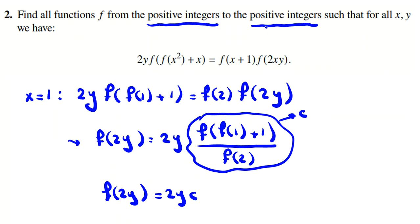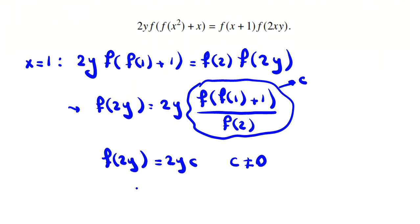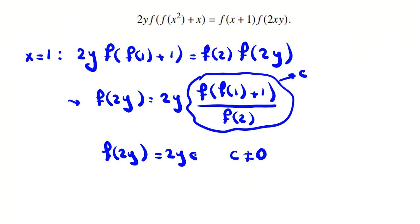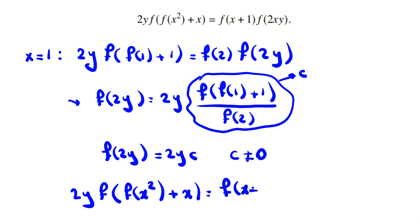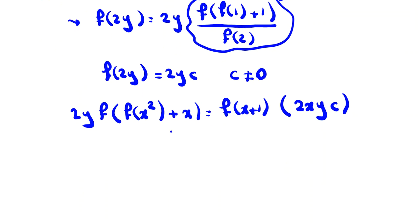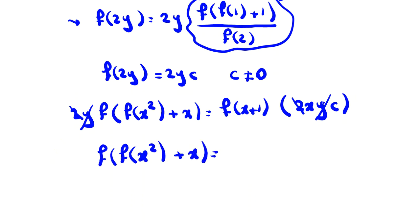We know f(2) is not zero because f maps positive integers to positive integers, and c is not zero because the numerator involves f of something, which is also a positive integer. Now that we've found f of even numbers, we substitute back into the main equality. After dividing both sides by y and by 2, we conclude that f(f(x²+x)) = xc·f(x+1).